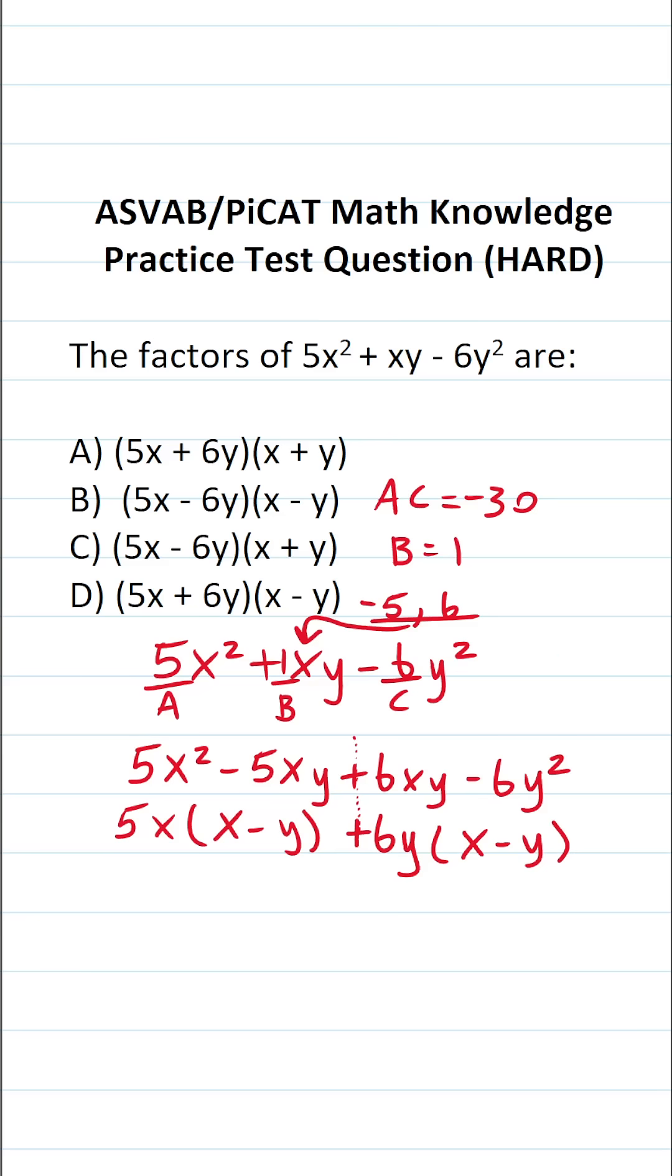Now to finish this, all we're going to do is combine these two. This becomes (5x + 6y) times—and these repeat twice, so just bring one of them down—(x - y). So when we factor this one, we get (5x + 6y)(x - y), which as you can see is answer choice D.